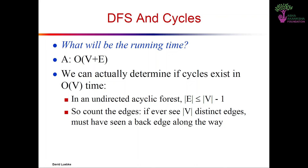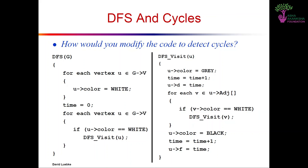To illustrate why cross edges don't exist in undirected graphs: assume there is a cross edge. Applying DFS, we go to source, then to a vertex, and visit its neighbor. We would visit that neighbor from this vertex rather than backtracking, because it would still be white. So that edge would actually be a tree edge, not a cross edge — cross edges cannot exist in undirected graphs.